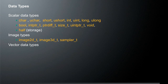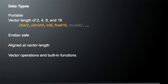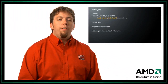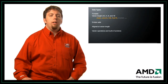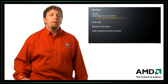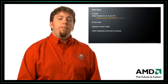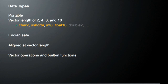Let's look at the different data types. There are scalar data types such as int, short, long, ulong, and others. There's also a half type, but that's really for storage and not necessarily for processing. There are image types: Image2D, Image3D, and Sampler for storing and sampling image data. And there are vector types, which are designed to be portable across runtimes. OpenCL requires vector lengths of 2, 4, 8, and 16. The types are endian-safe and aligned at vector length, so you don't have to worry about endian conversions across GPU, CPU, or DSP.